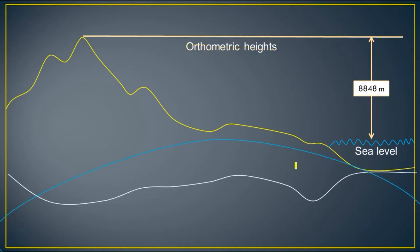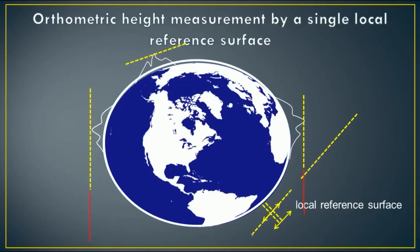Now, the main question is, is it possible to measure the orthometric height of any place using a single reference surface? The answer should be no. That is the reason why we study global reference surface instead of local reference surface.